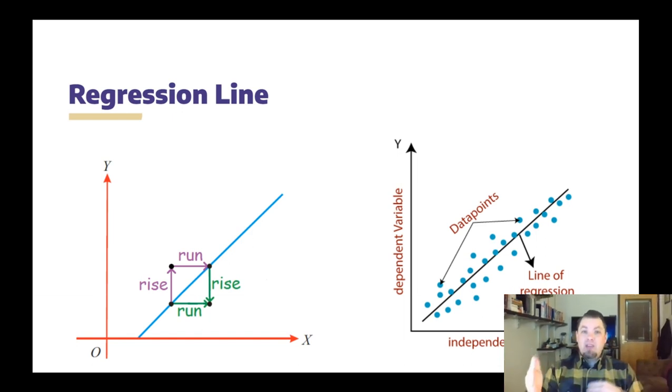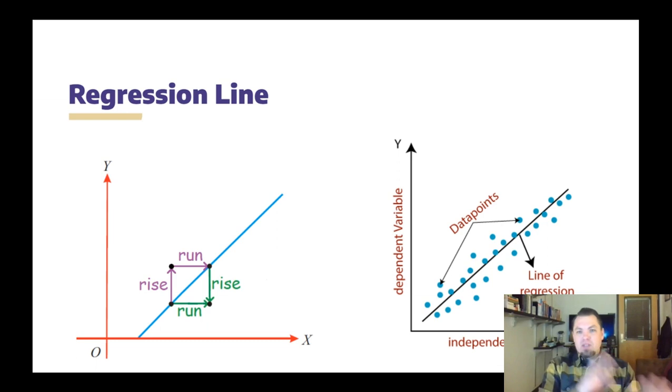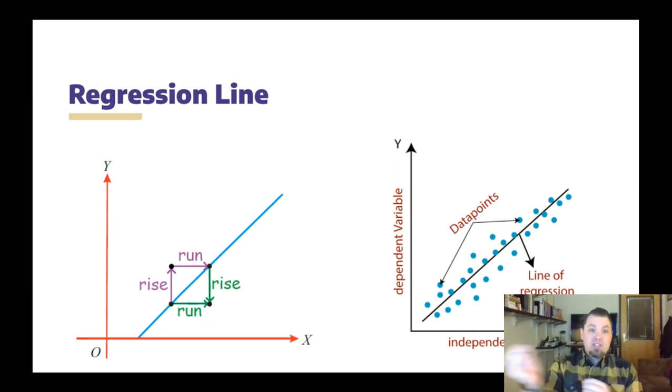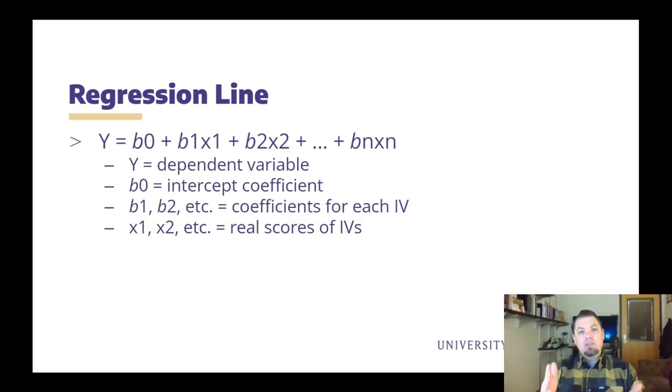This line is determined by finding the values of the slope and the intercept. In regression, we call these values coefficients. Coefficients are basically calculated by comparing the actual values against the predicted values. The difference between those actual values and the predicted values or the regression line as part of the predicted values, we call residual scores or error terms.